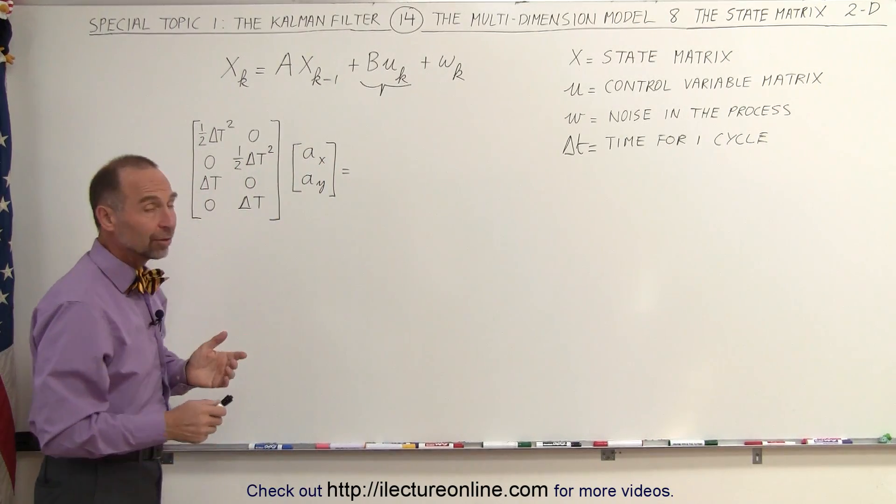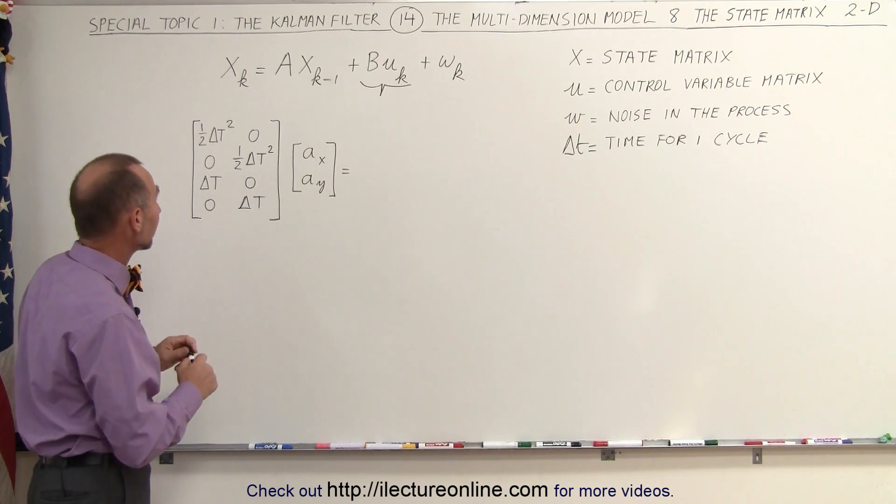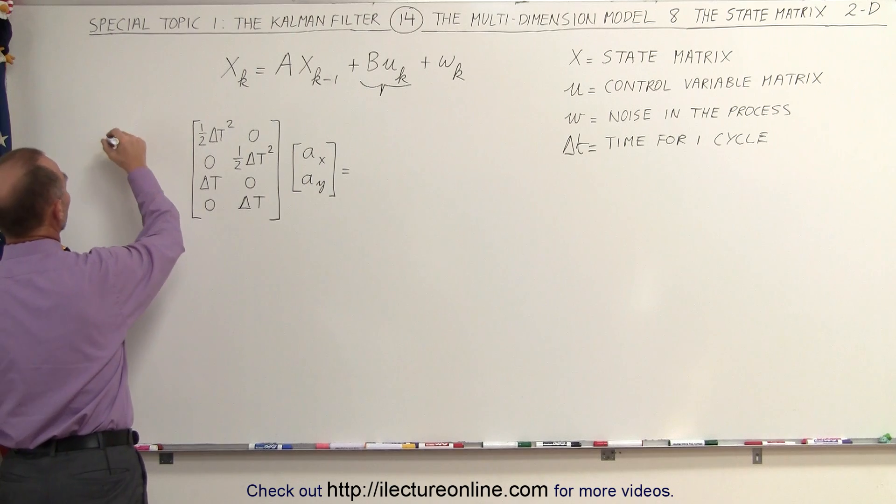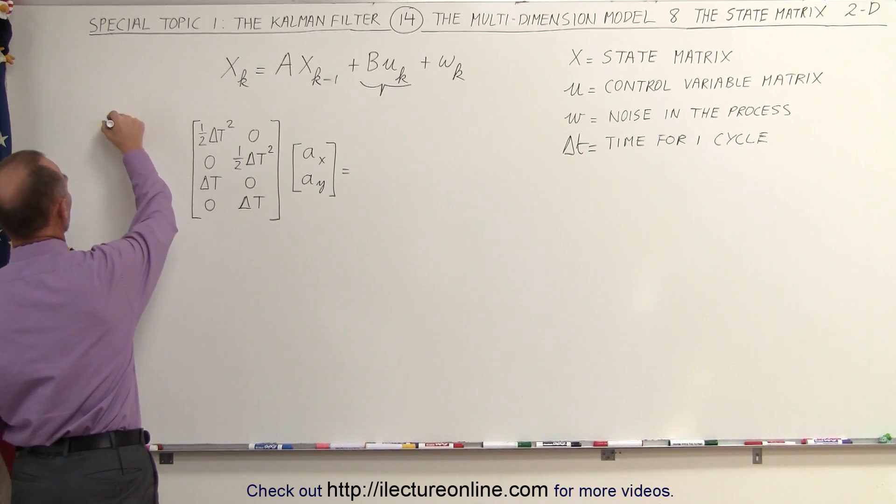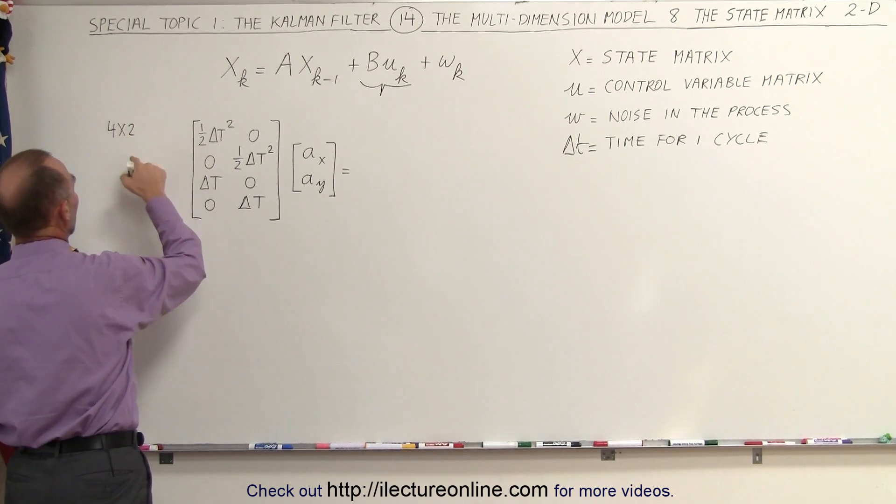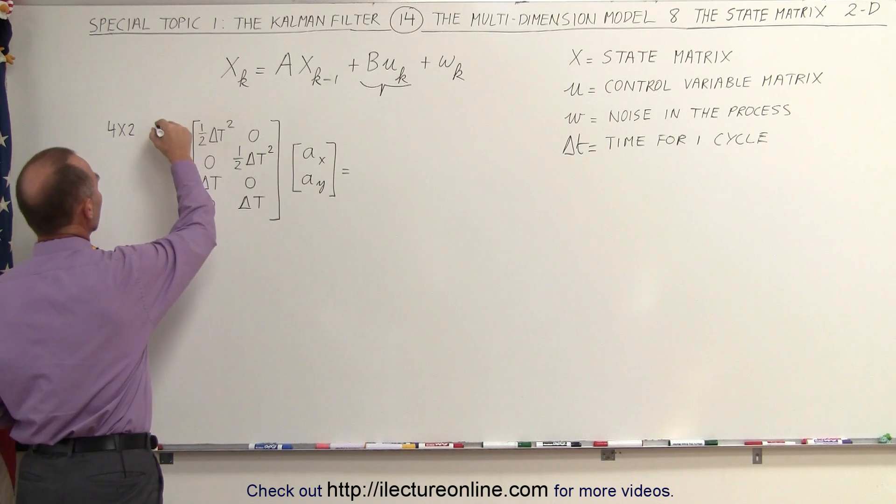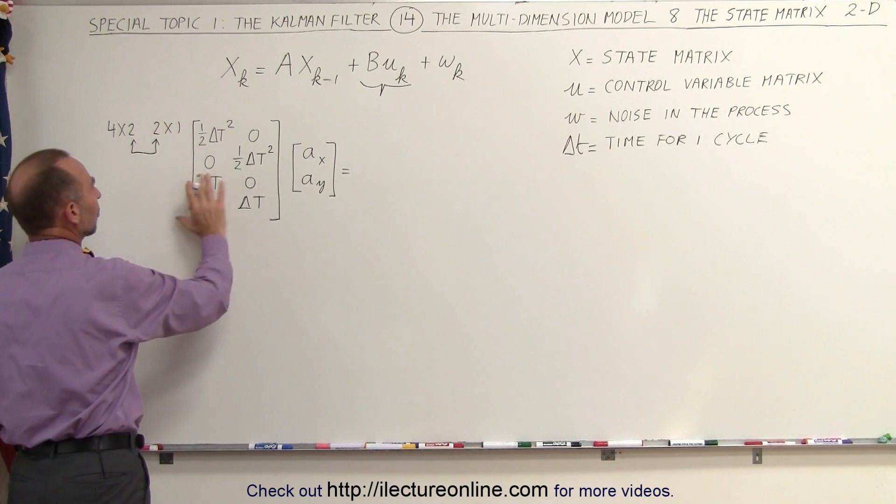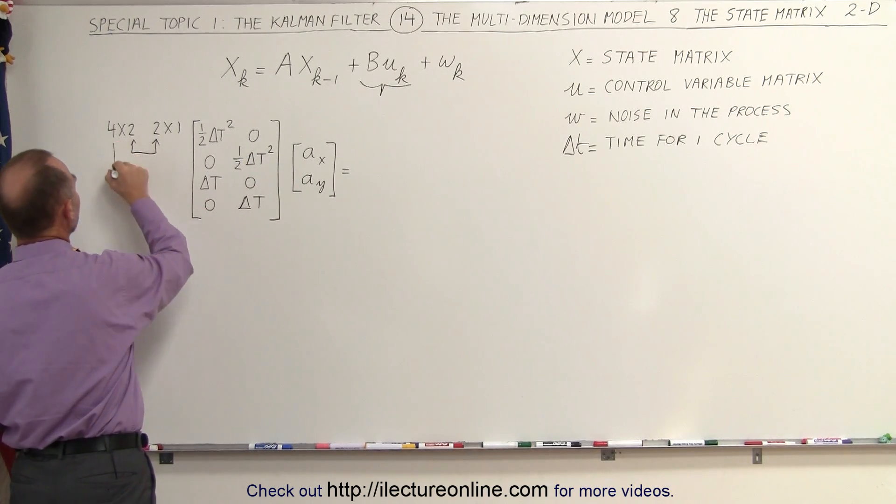When we multiply these together, well first of all let's see if we can multiply them together because we have to have the correct size matrices. So this is a 4 by 2 matrix, and we multiply that times a 2 by 1 matrix. You can see that the inner two numbers are the same so that is a permissible way to multiply them and at the end we're going to end up with a 4 by 1 matrix.